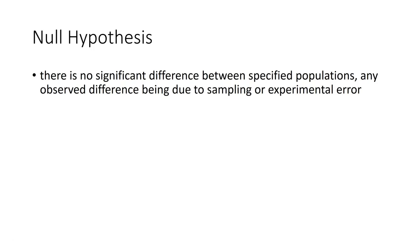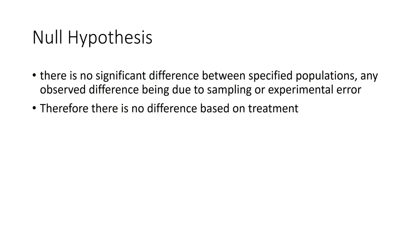Now, you can't really prove that, so what you do is you test that there is a significant difference. Therefore what you're looking at is that any difference you have is due to difference between the specific populations and it's not due to sampling or experimental error. So your null hypothesis is: no difference exists, therefore there is no difference based on treatment. When you test it, you test it looking at whether you have a difference based on treatment. Therefore if you do, you know that the null hypothesis is wrong.